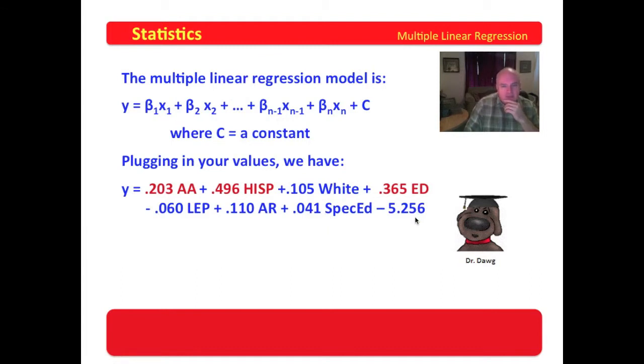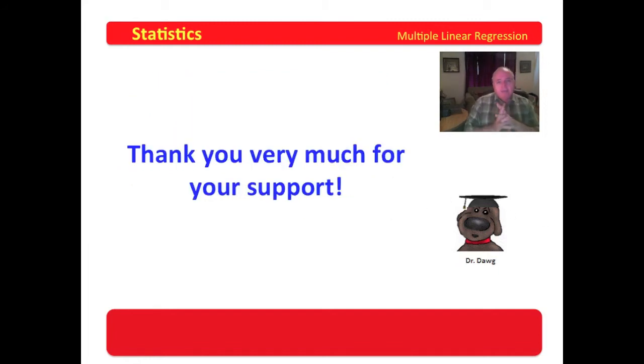Now the multiple linear regression model indicates to us that the Hispanic percentage is very big in positively predicting the percentage of disciplinary placements. The next largest is if you're economically disadvantaged and then the next largest if you're African American. The moral to this is don't be Hispanic or African American or economically disadvantaged or you're going to be sent to disciplinary placement if you do something. Seems to me that we might have a problem there if we really look at it.